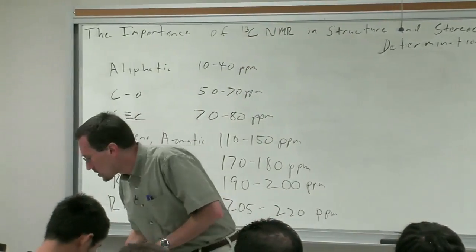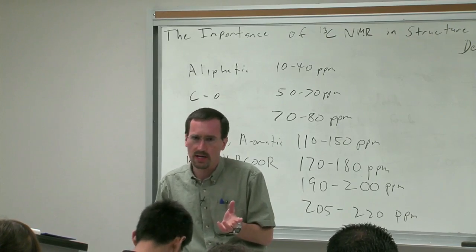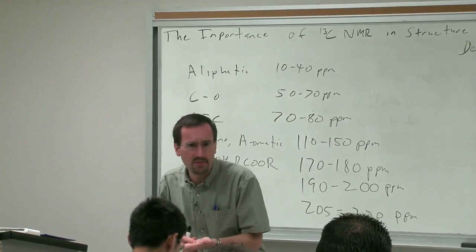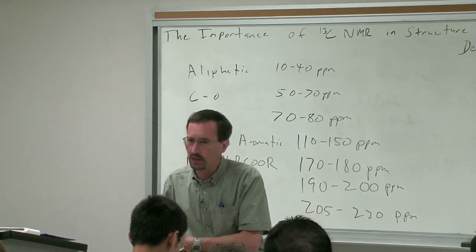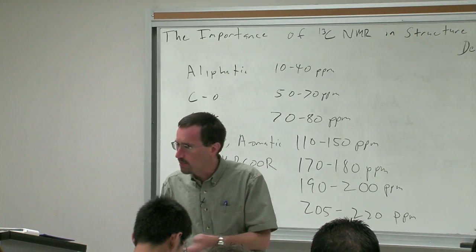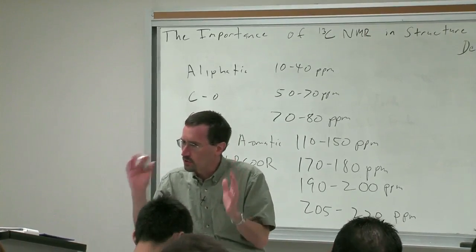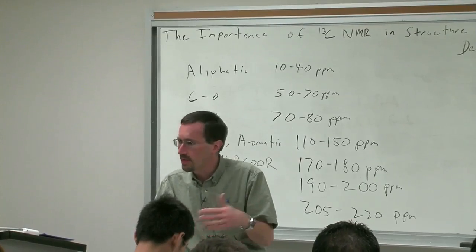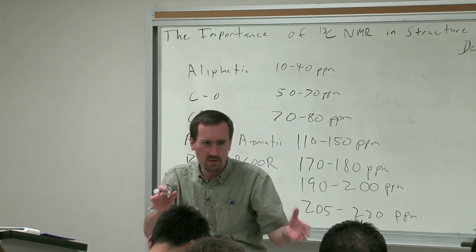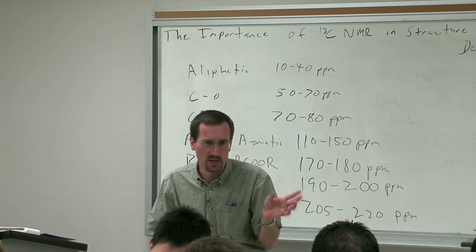C13 shifts have a bigger range and there's also more richness. When we talked about proton NMR it was pretty easy, and we were able to do back-of-the-envelope calculations where you could peg the chemical shift to within a few tenths of a ppm. If you're next to an oxygen you're about 2 ppm downfield, if you're next to a benzene ring, double bond, or carbonyl you're about 1 ppm further downfield.